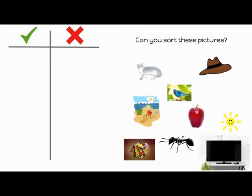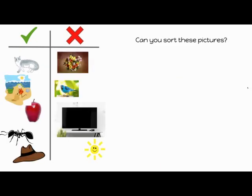So if we look at the picture of the cat — k, eh, t — there's an eh sound in the middle of the word, so that picture can go in the column with a tick, just like this. Now you can pause the video and have a go yourself. Draw the pictures into the right columns. Does yours look a bit like this?